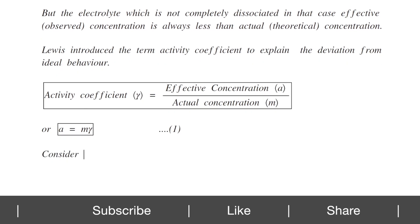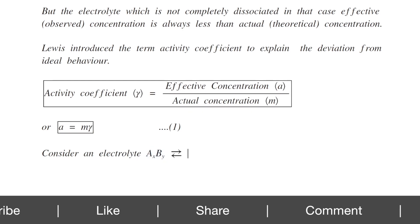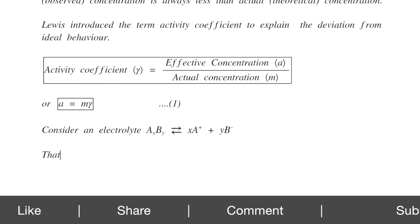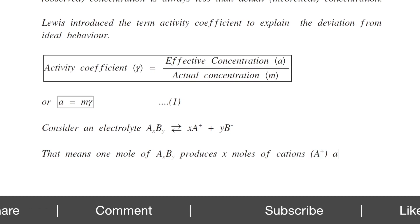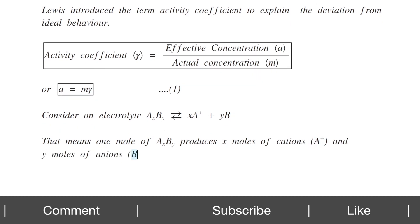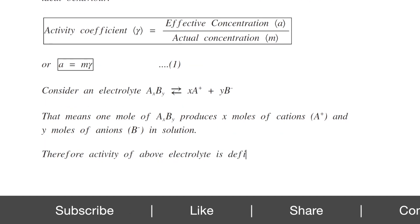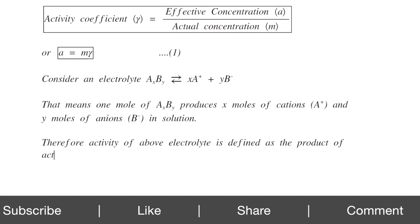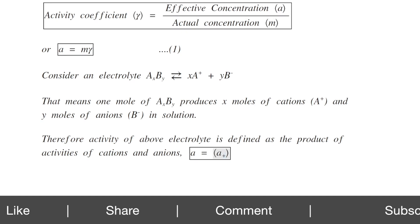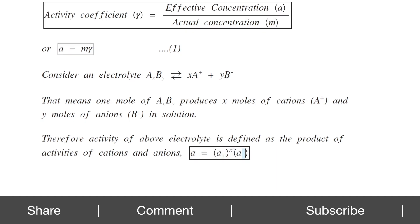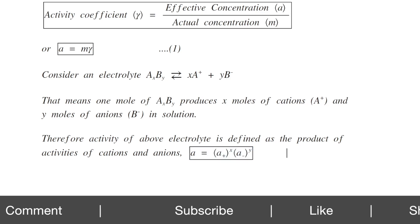Consider an electrolyte AₓBᵧ producing X moles of A⁺ cations and Y moles of B⁻ anions — that is, 1 mole of AₓBᵧ produces X moles of cations and Y moles of anions in solution. Therefore, the activity of this electrolyte is defined as the product of the activities of cations and anions: A equals A₊^X multiplied by A₋^Y. This is equation number 2.